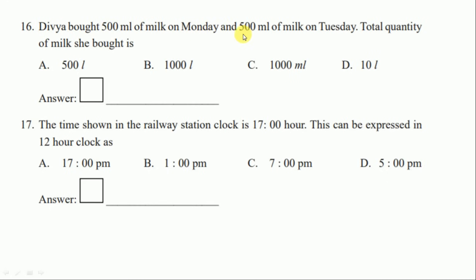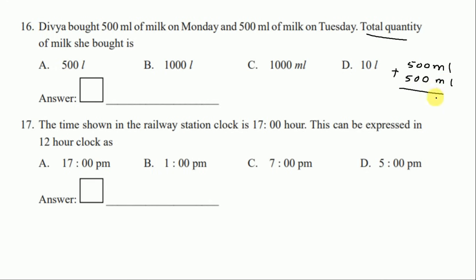Question number sixteen: Divya brought 500 ml of milk on Monday and 500 ml of milk on Tuesday. Total quantity of milk she brought — we add the two: 500 plus 500 equals 1000 ml. So the right answer is option C, 1000 ml.